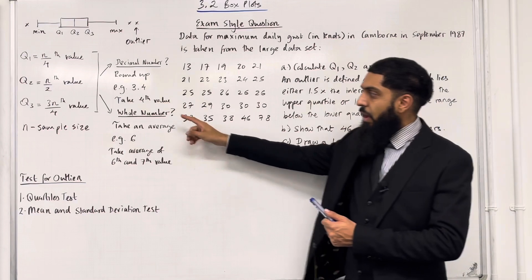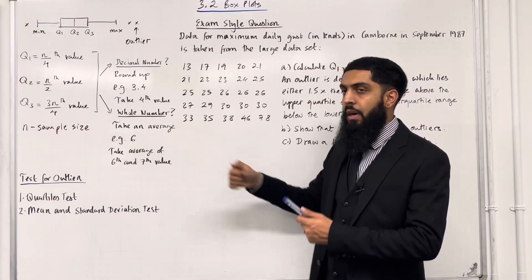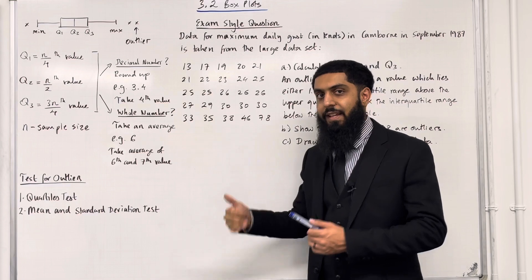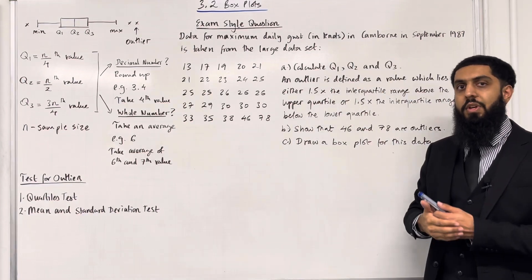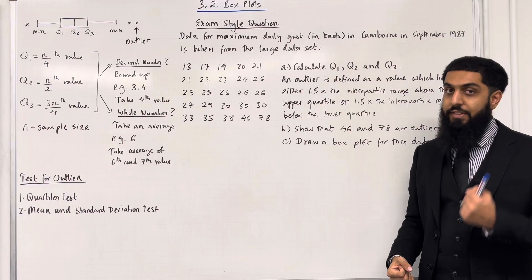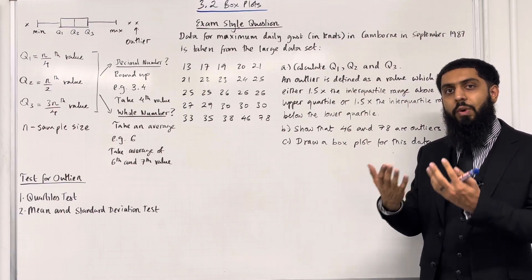Scenario two: if your answer is a whole number, you take an average. For example, if you have 6, you take the average of the 6th and 7th value. So you put your data set in ascending order, take out the 6th and 7th values, and calculate the average.